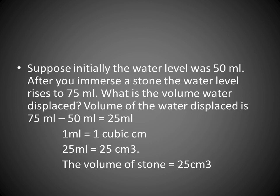Summary example: Initially, the water level was 50 ml. After immersing the stone, the water level rises to 75 ml. So, the volume of water displaced is 75 ml minus 50 ml, which equals 25 ml. Since 1 ml equals 1 cubic centimeter, 25 ml equals 25 cubic centimeters. Therefore, the volume of the stone is 25 cm³.